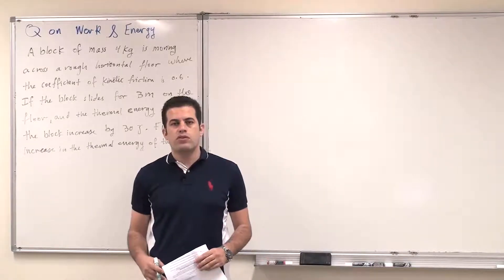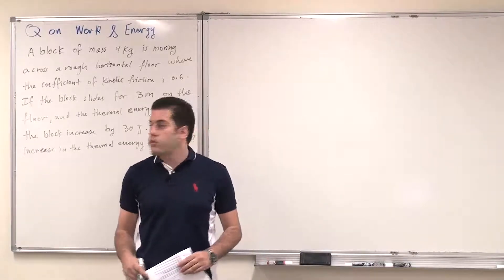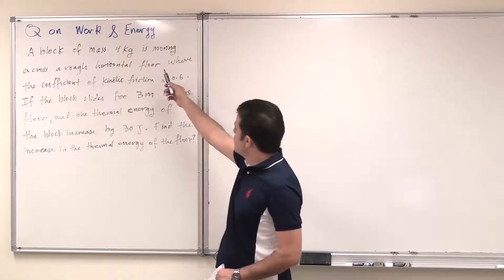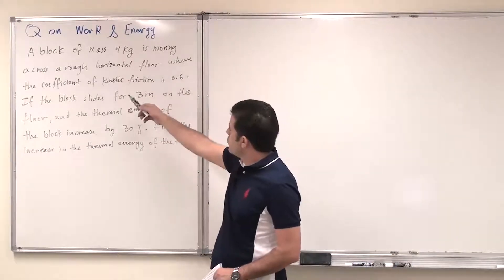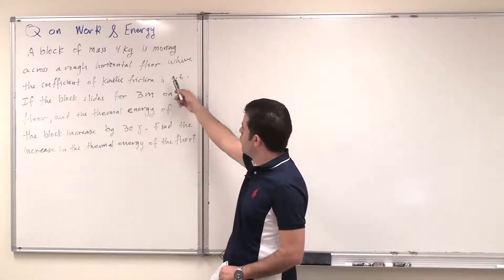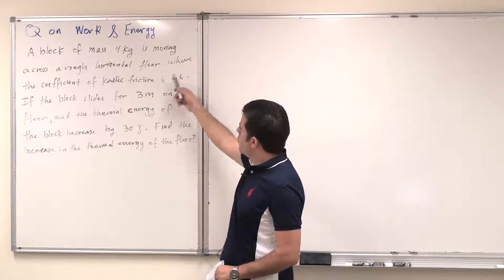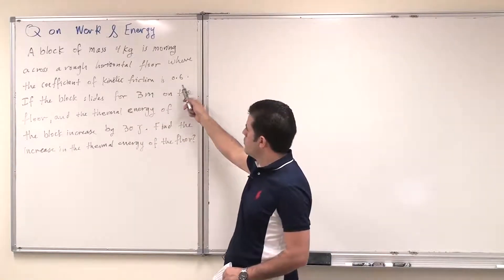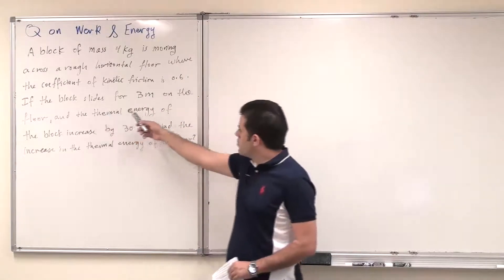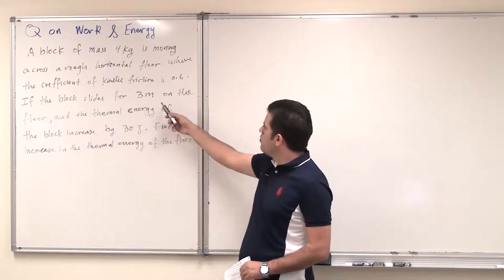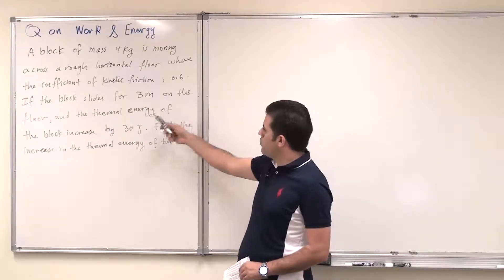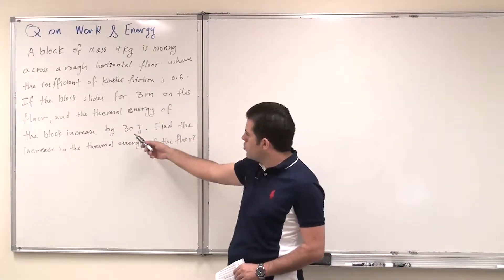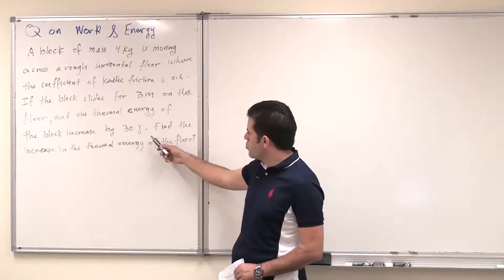Assalamu alaikum. This question is on work and energy. A block of mass 4 kilograms is moving across a rough horizontal floor where the coefficient of kinetic friction is 0.6. The block slides for 3 meters on the floor and the thermal energy of the block increases by 30 joules.